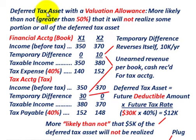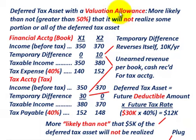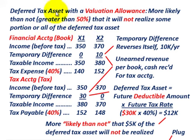What we're going to be going over here is a deferred tax asset with a valuation allowance. When we're dealing with these deferred tax assets, we set up this valuation allowance where it's more likely than not — a greater than 50% chance — that we'll not realize some portion or all of this deferred tax asset. So let's start by determining what our deferred tax asset is.